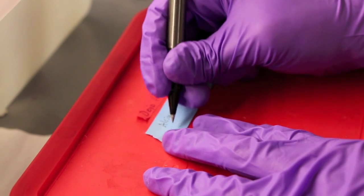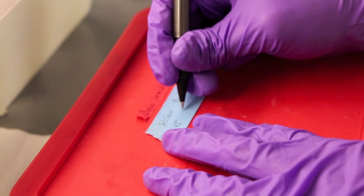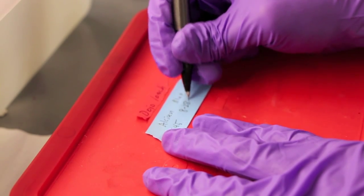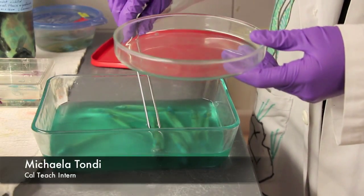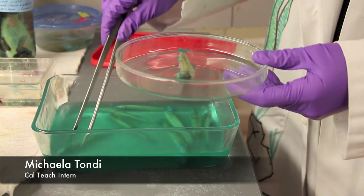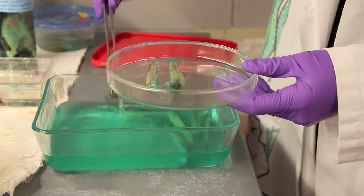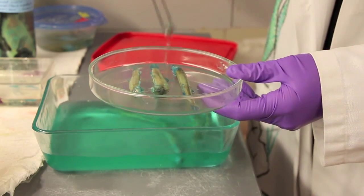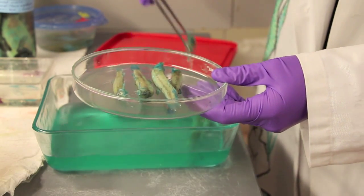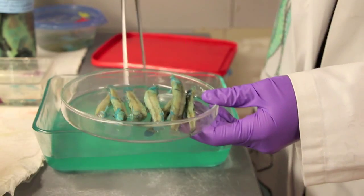Remember, you don't want to mix any of these chemicals up, and you want to be sure you know when to take it out to proceed to the next step. After waiting 3 to 24 hours, or after your specimens are properly stained, remove them from alcine blue. As you can see, the alcine blue stains the cartilage of the fish.